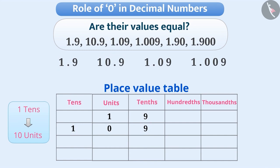Similarly, in 1.09, there is 1 unit and 9 hundredths. 1.009 has 1 unit and 9 thousandths. Since the value of digits is different in all these numbers, so the value of numbers is also different.